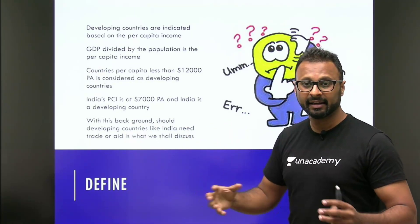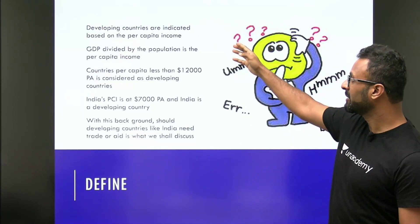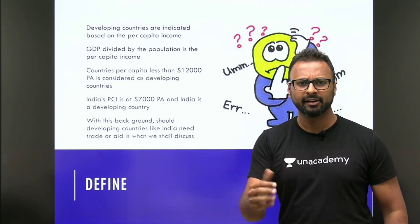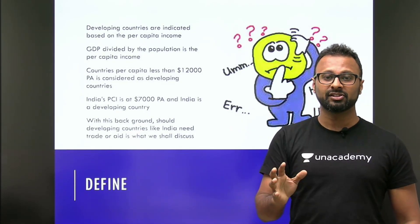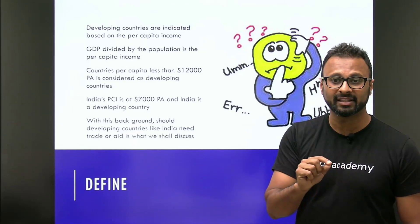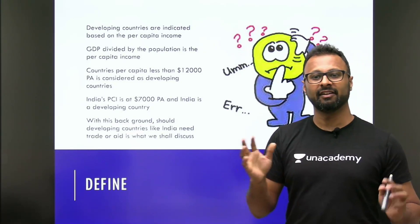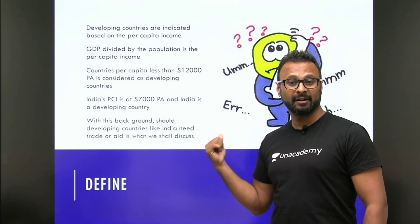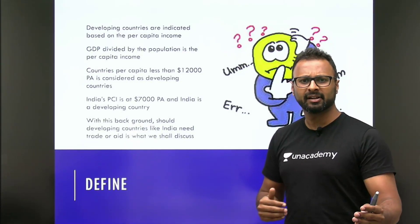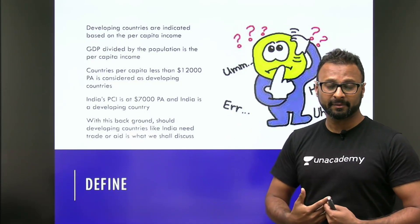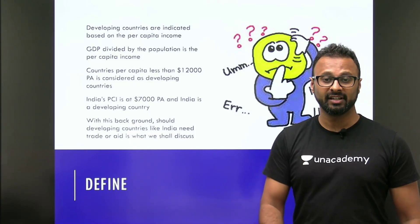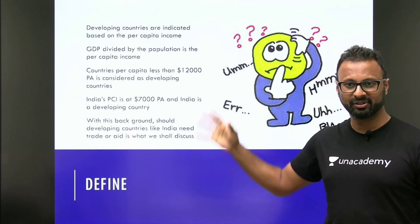After the caption, go to the definition. What does 'developing country' mean? Developing countries are identified by PCI — per capita income. PCI is calculated by dividing GDP by the population of the country. If a country's per capita income is more than $12,000 per annum it is a developed country. India today is at $7,000 per annum and thereby is still a developing country. With this background, should developing countries like India trade or need aid — that is what we are going to discuss.